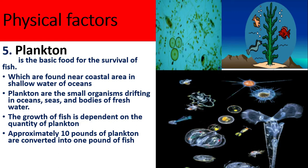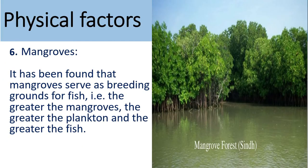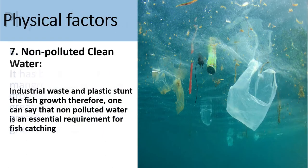The next factor is mangroves. It has been found that mangroves serve as breeding grounds for fish — the greater the mangroves, the greater the plankton, and the greater the fish. Also, unpolluted, clean water is good for fish growth, because industrial waste and plastic stunt the growth of fish.